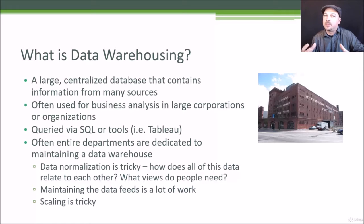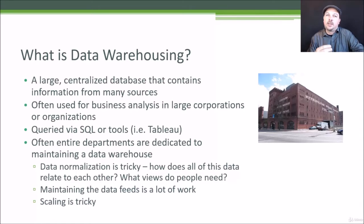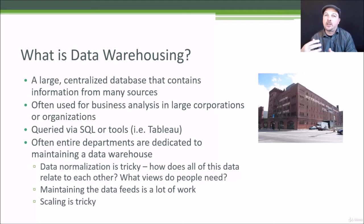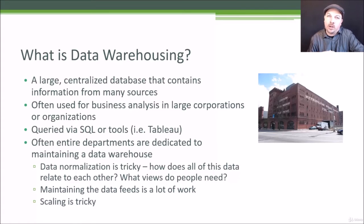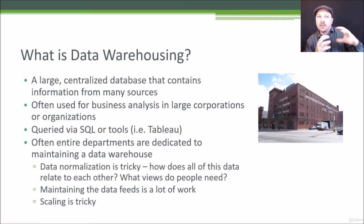Data warehousing is a very complicated problem. At Amazon, there was an entire department for data warehousing working full time, and they never had enough people. Challenges include data normalization — figuring out how fields from different sources relate, ensuring columns are comparable across data sources, dealing with missing or corrupt data, and handling outliers or bot traffic. Maintaining those data feeds is also a big problem, especially when large transformations are needed to take raw data like web logs into a structured database table.